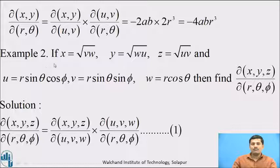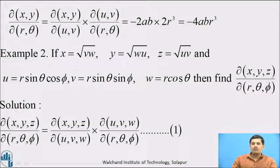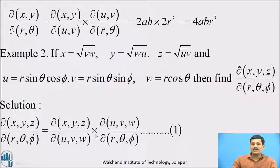Let us consider one more example. If X equals root(VW), Y equals root(WU), Z equals root(UV), and U equals R sin theta cos phi, V equals R sin theta sin phi, W equals R cos theta, then find the Jacobian of X, Y, Z with respect to R, theta, phi. These relations imply that X, Y, Z are composite functions of R, theta, phi, so this Jacobian equals the product of the Jacobian of X, Y, Z with respect to U, V, W and the Jacobian of U, V, W with respect to R, theta, phi.